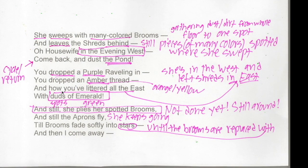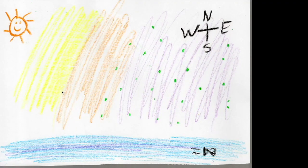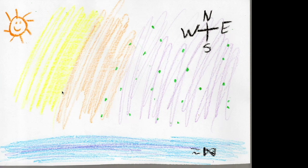Until the brooms fade softly into stars — I'm going to connect the stars with the evening, and that sounds familiar considering what I just drew with the emerald. And then I — so there's the speaker; we're in first person, which tells us the 'she' at the beginning is not the same as the 'I.' And then I come away — so once all the colors fade into stars, she goes home, just like she would at night. All these clues put together make me think of a sunset. We've got the sun moving from east to west, part of the sky covered in dark color with duds of emerald and stars and evening, and we watch the sun go away.